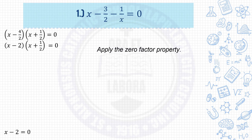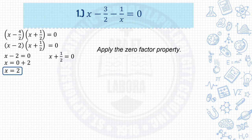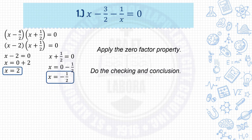Apply the zero factor property. x minus 2 equals 0: transpose negative 2, giving x equals 0 plus 2, so x equals 2. Next, x plus 1 half equals 0: transpose 1 half, giving x equals 0 minus 1 half, so x equals negative 1 half. The second value of x is negative 1 half.